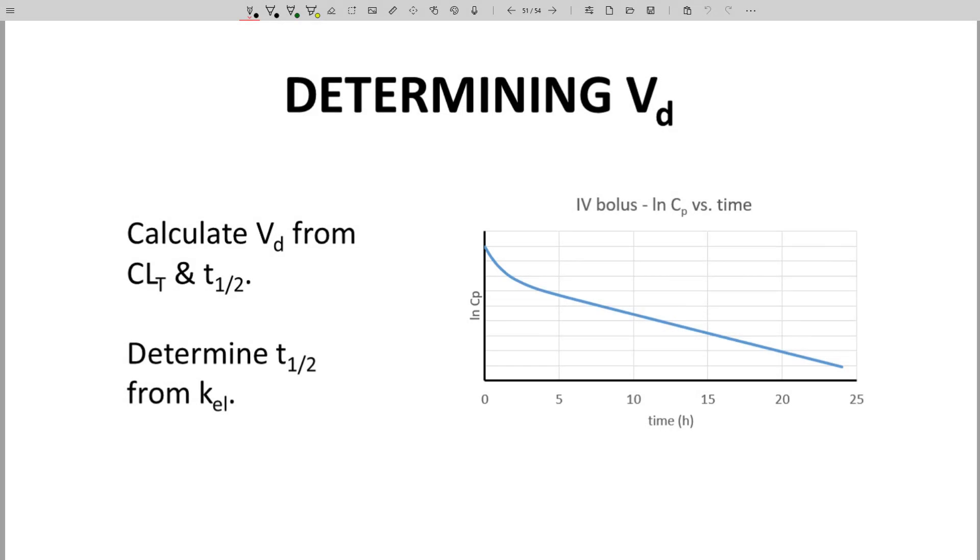The approach we have used to determine Vd requires determination of a molecule's half-life and then clearance. From these two values, we can determine volume of distribution, Vd. This approach uses the linear portion of the natural log Cp time curve to calculate minus KEL and then half-life.